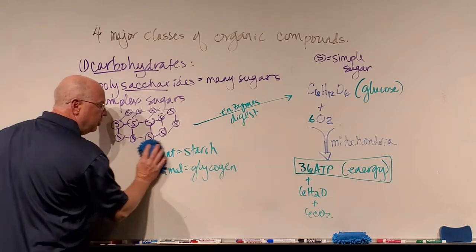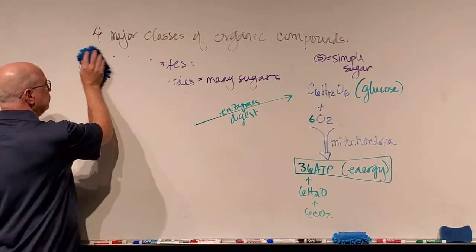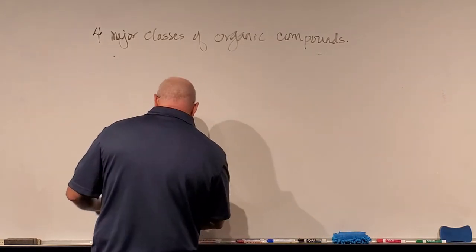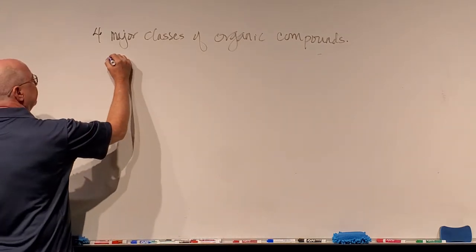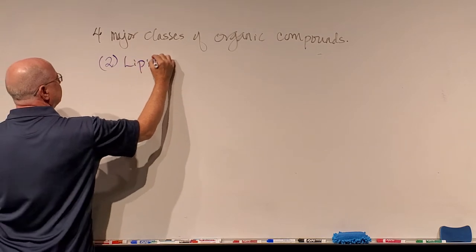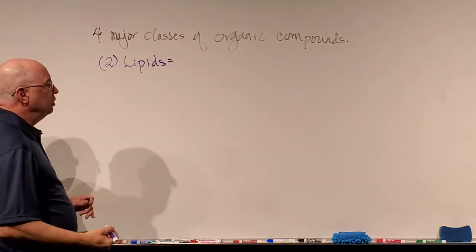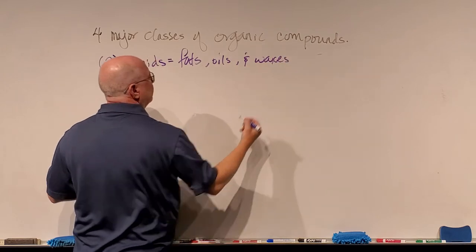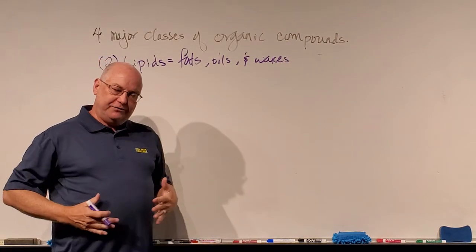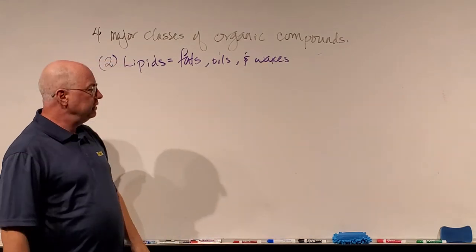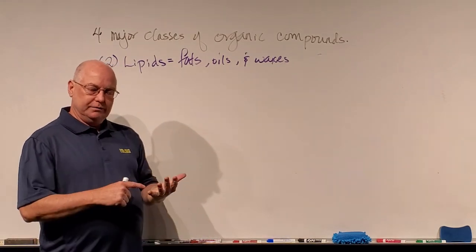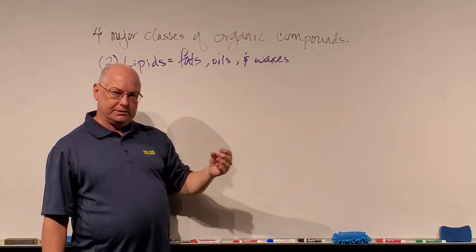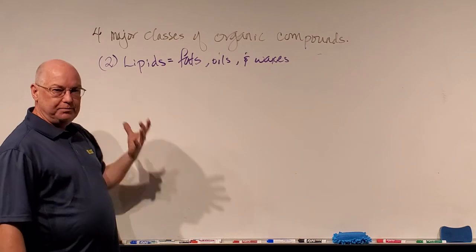Now we're going to go on to the second major organic compound called lipids. The second major class of organic compounds is going to be called lipids. Lipids are fats, oils, and waxes. If it exists in nature in the form of a fat — like the fat on our bodies, or the fat on bacon — if it's an oil like vegetable oil, motor oil, or crude oil, or if it's a wax like earwax or beeswax, those are lipids.